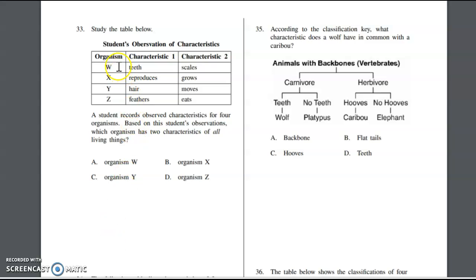Number 33 says study the table below. We have organisms W, X, Y, and Z and characteristics one and two. W has teeth and scales - it could be an alligator. X reproduces and grows. Y has hair and moves - it's probably a mammal. Z has feathers and eats - it's going to be a bird. Which organism has two characteristics of all living things? That would be X - it says reproduces and grows, two characteristics of life. Living things are able to reproduce and living things are able to grow and develop over time. Organism X, B would be our correct answer.